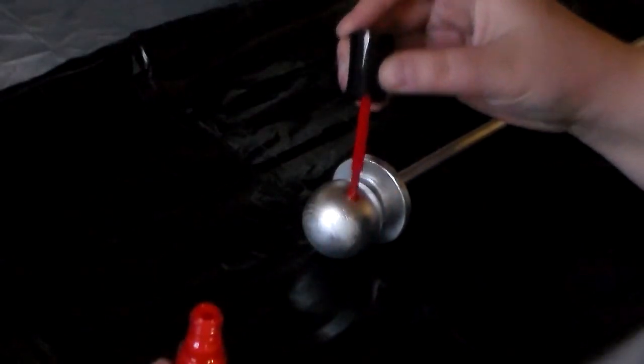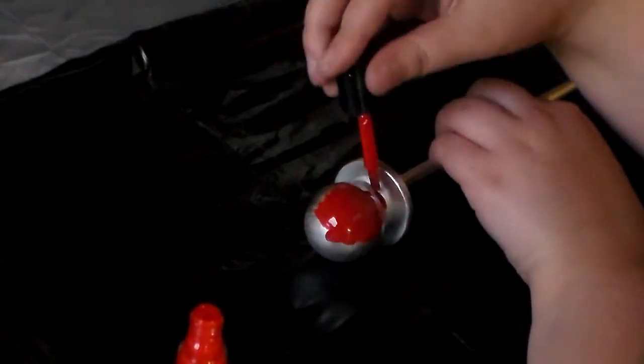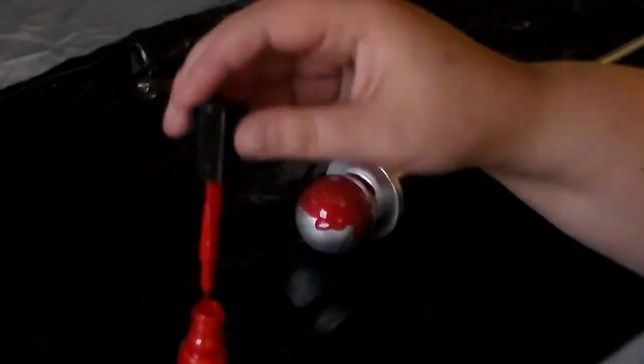For the red ball, I used a red nail polish that had some glitter in it to make it shiny. Nail polish can cost anywhere from $5 to $10, and multiple coats are likely needed.